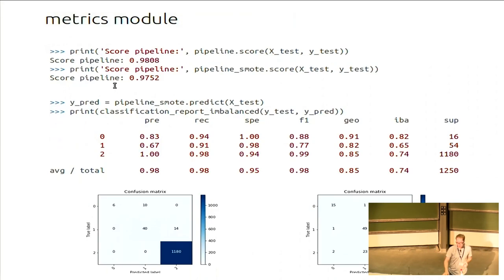We also included some metrics because there are some new metrics for imbalance cases. So if you use, for instance, the normal accuracy, you would get some score which is decreasing but it doesn't mean anything. And that's why we implemented some additional specificity, geometric mean and index balance accuracy, which are usually used in the literature.